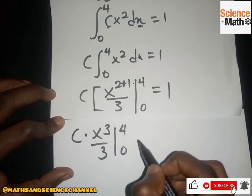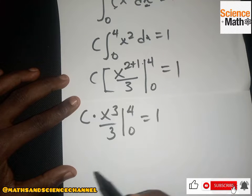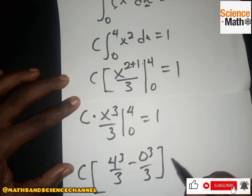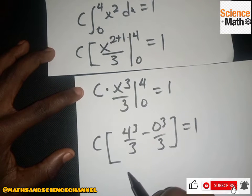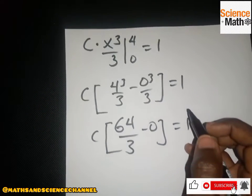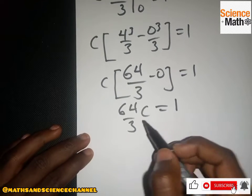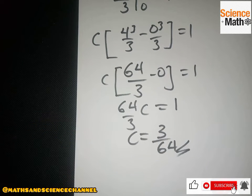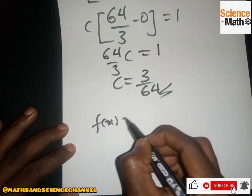Substituting the limits, we take c out and compute 4³ divided by 3 minus 0³ divided by 3, equal to 1. Since 4³ = 64, we have c times 64 over 3 minus 0 equal to 1. Making c the subject, we get c = 3 over 64.